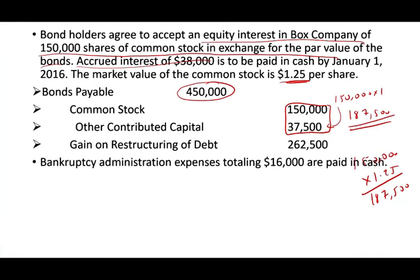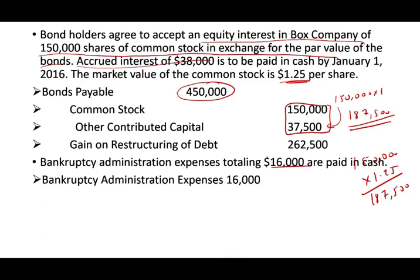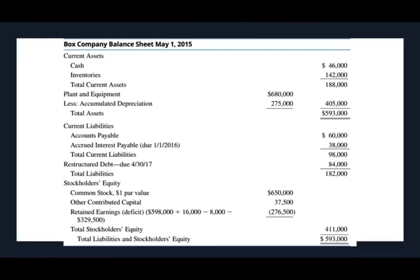Last, bankruptcy administration expenses totaling $16,000 are paid in cash. We debit the expense — which reduces retained earnings — and credit cash, which reduces cash by $16,000.